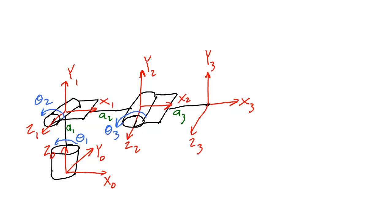Before we move on in our study of forward kinematics, let's take a look at how what we know about rotation matrices applies to what we know about the kinematic diagrams. I'm showing here a complete kinematic diagram of an articulated manipulator. Previously, we've learned that a rotation matrix expresses the rotation between one frame and the next frame.